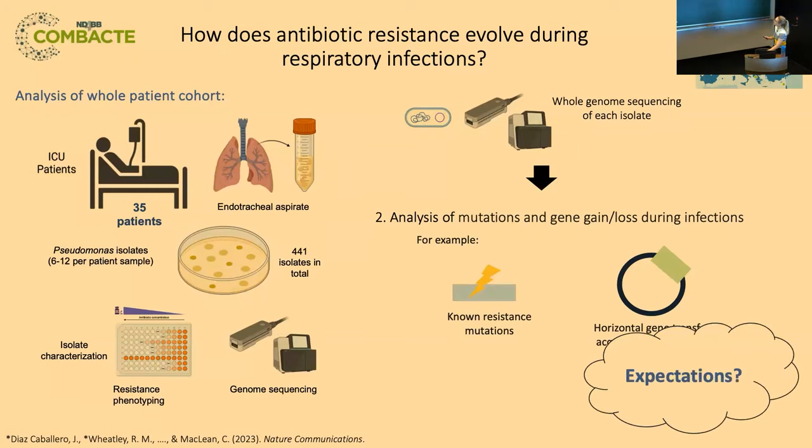Indeed, we saw good examples of this in single patient case studies. When looking at a particular patient with high resolution sequencing and sampling, we saw one sequence type of Pseudomonas with mutations to key antibiotic resistance genes. In another patient sampled over a month, again a single sequence type with resistance driven by mutations in antibiotic resistance genes. So that was our method and expectation — but what did we actually see across the whole cohort?